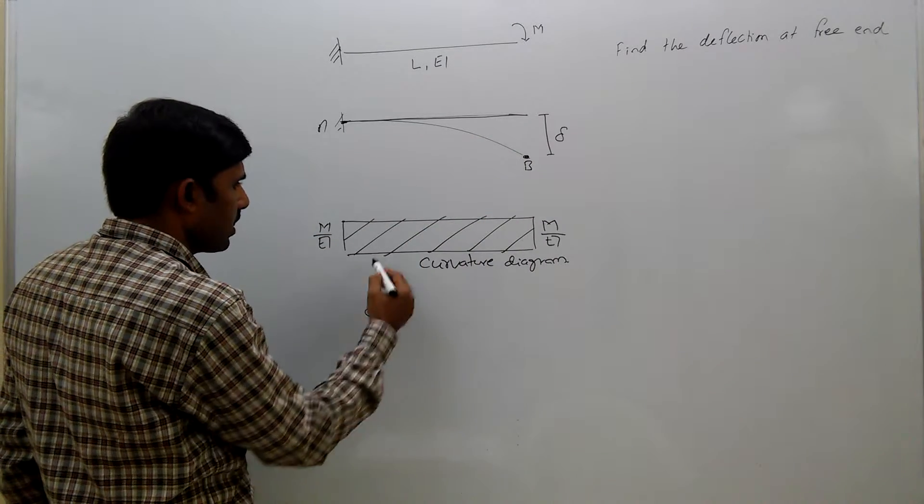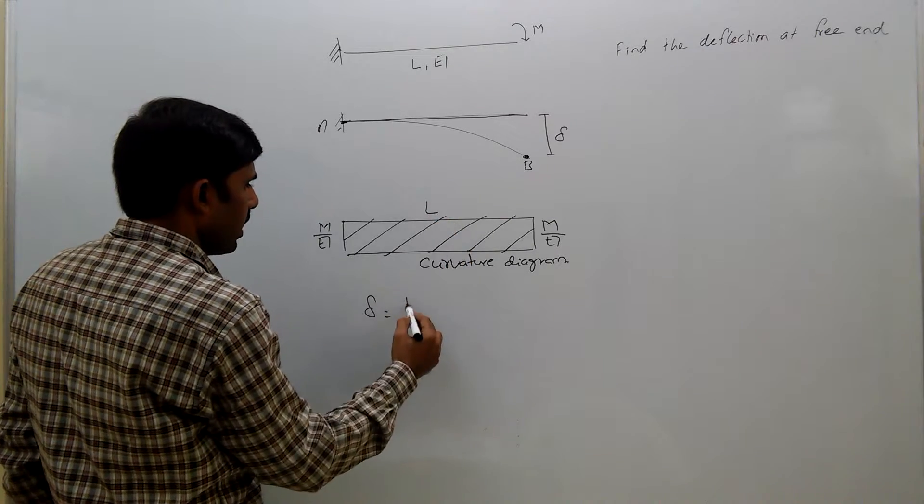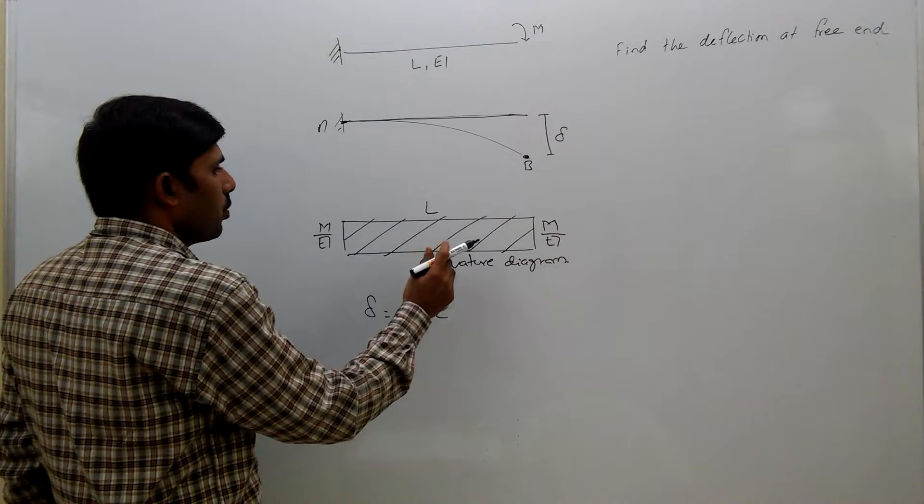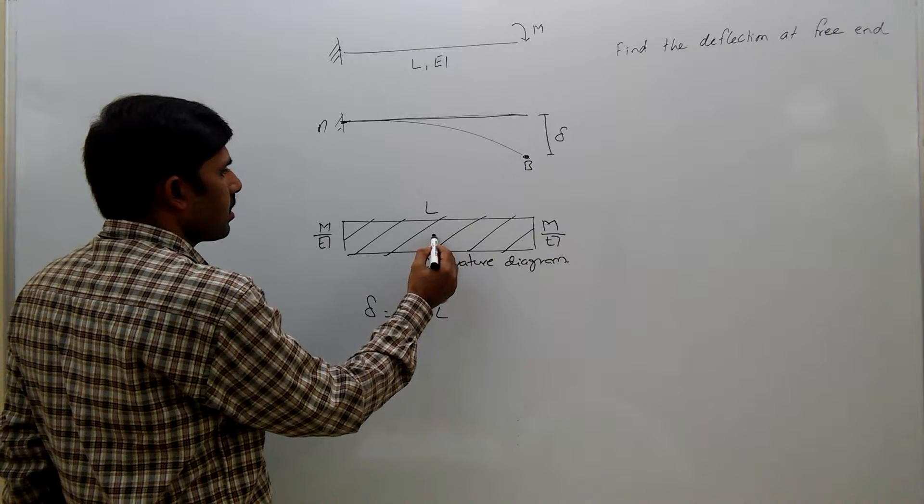So delta equals, what is the area? We will get M by EI into L. This is the area. We need to multiply this with the centroid distance.